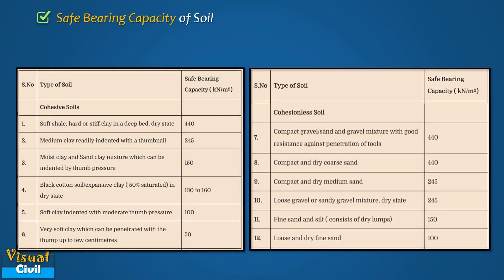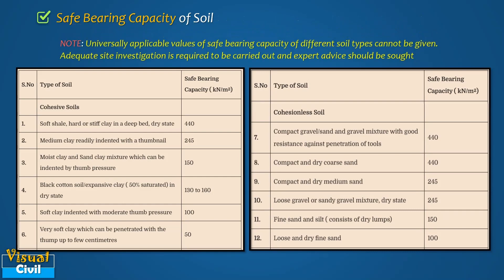However, in the absence of soil data or field test, the following SBC values can be used as a guide for preliminary analysis for unimportant and lightly loaded structures only. Keep in mind that universally applicable values of safe bearing capacity cannot be given, hence it is always advisable to get the safe bearing capacity of soil by proper geotechnical investigation from an expert.